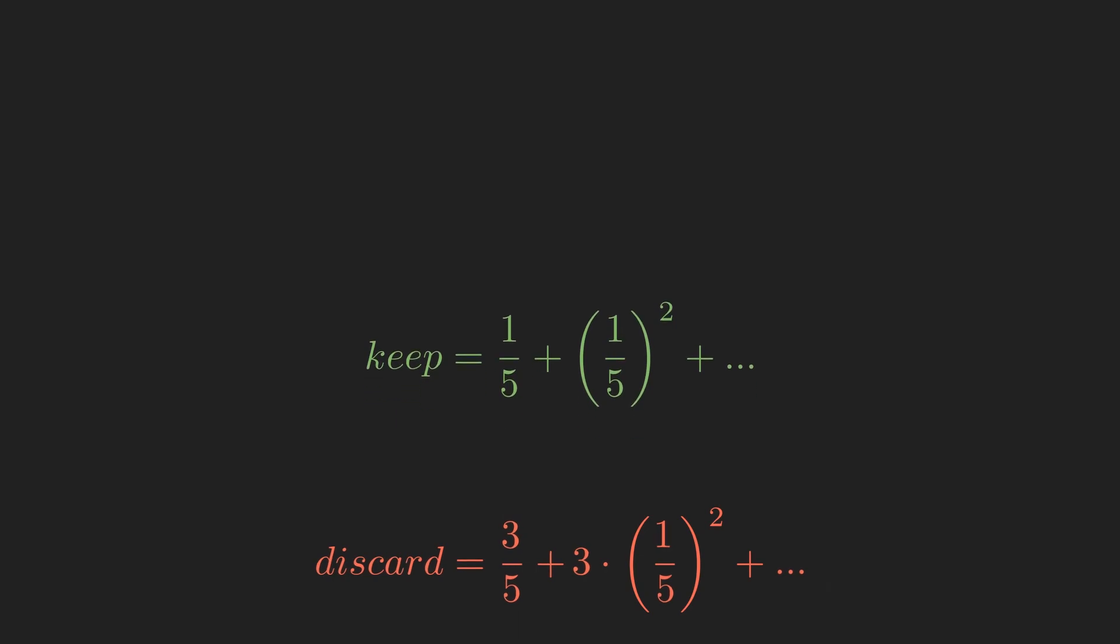Notice that our discard pile is simply 3 times our keep pile. Also, due to the fact that our working square disappears when you repeat this infinitely, our keep and discard piles must add up to 1. If you rearrange this, we discover that 1 fifth plus 1 fifth squared and so on equals 1 quarter.